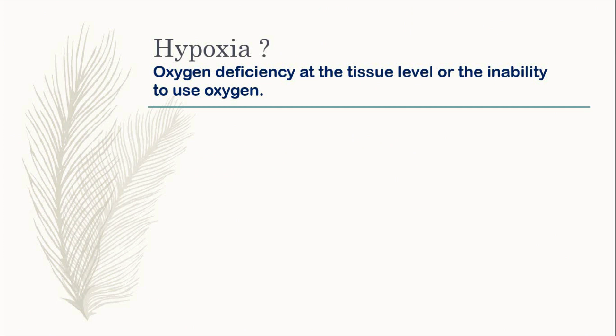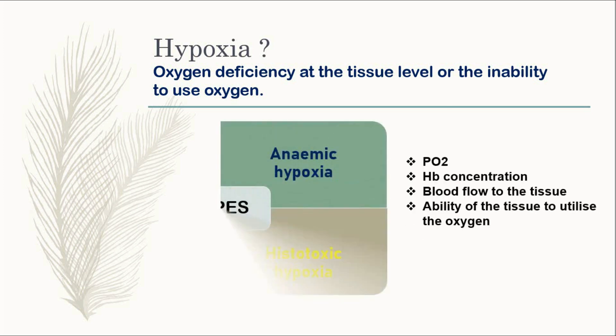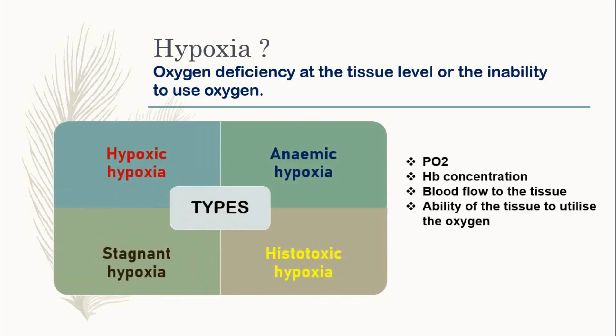First, let me look at the definition of hypoxia. It is an oxygen deficiency at the tissue level, or the inability of the tissue to use the oxygen. You need to remember there are four types of hypoxia including hypoxic, anemic, stagnant, and histotoxic hypoxia. These four points on the right side indicate which type of hypoxia it is, and I'll briefly explain each one after this.